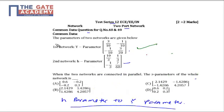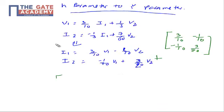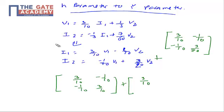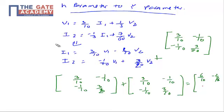We know that the Y parameter of the first network is already given. So just add the Y parameters of the two networks. The resultant Y parameter is: [3/10, -1/10; -1/10, 3/10] plus [3/10, -1/10; -1/10, 3/20]. Adding them gives the resultant Y parameter: 6/10, -2/10, -2/10, and 3/10.